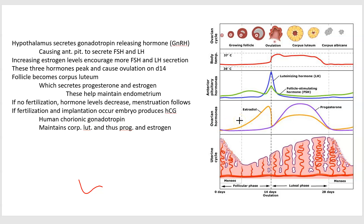Let's start with the anterior pituitary and ovarian hormone levels. After menstruation, the female starts producing more and more estrogen, and at a certain critical mass, that's going to cause a spike in luteinizing hormone and follicle stimulating hormone, both of which are meant to mature the follicle and the oocyte. The hypothalamus responds to the increasing estrogen levels by producing and releasing gonadotropin releasing hormone, GnRH, which causes FSH and LH to spike, which causes the oocyte to be ovulated.